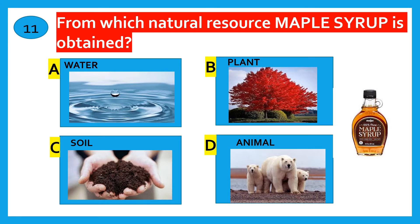From which natural source is maple syrup obtained? Water, plant, soil, animal. The correct answer is plant.